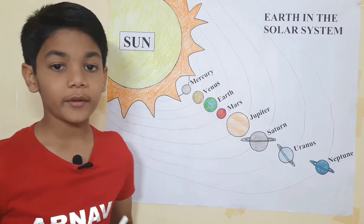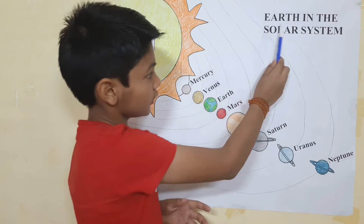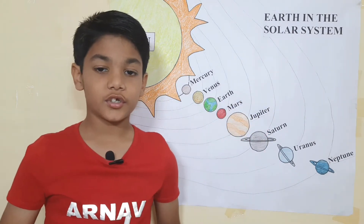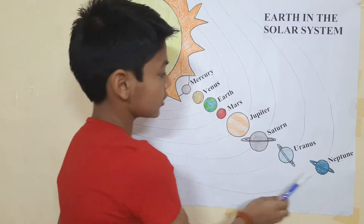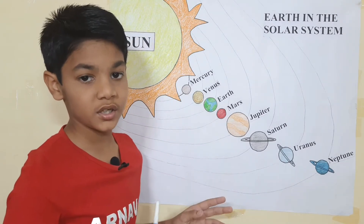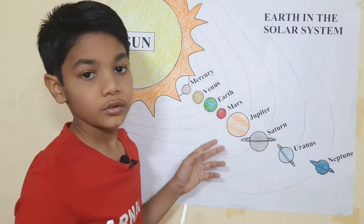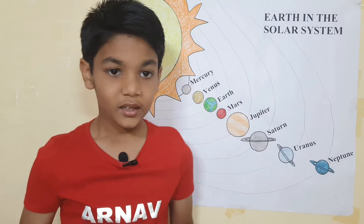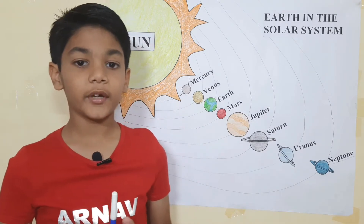Hello friends, I am Arnav. Today we are going to learn about our Earth in the solar system. Do you know what is the solar system? The sun, its planets, satellites, and some other celestial bodies form the solar system. Sometimes it is called the solar family, with the sun as its head. Our solar system is a part of the Milky Way galaxy.